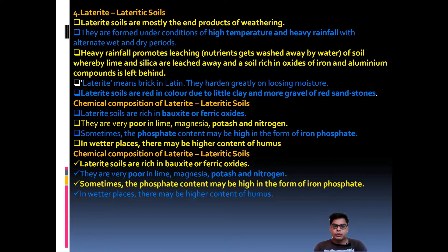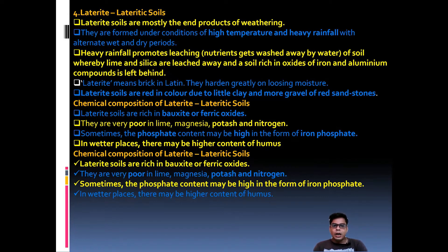The chemical composition of laterite soil: laterite soils are very rich in oxides and ferric oxide (Fe2O3), which is why the color of laterite soil is red. They are very poor in lime, magnesia, potash, and nitrogen. Sometimes the phosphate content may be high in the form of iron phosphate.